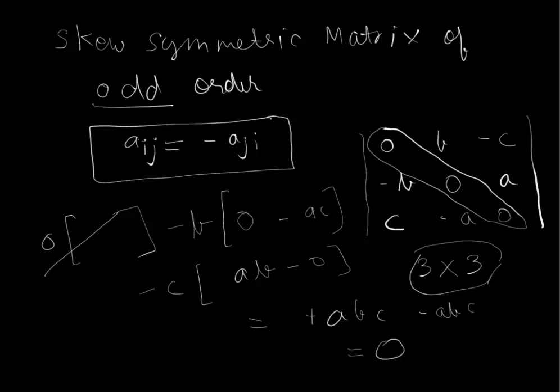So the element of ith row and jth column is the negative of element of jth row and ith column.